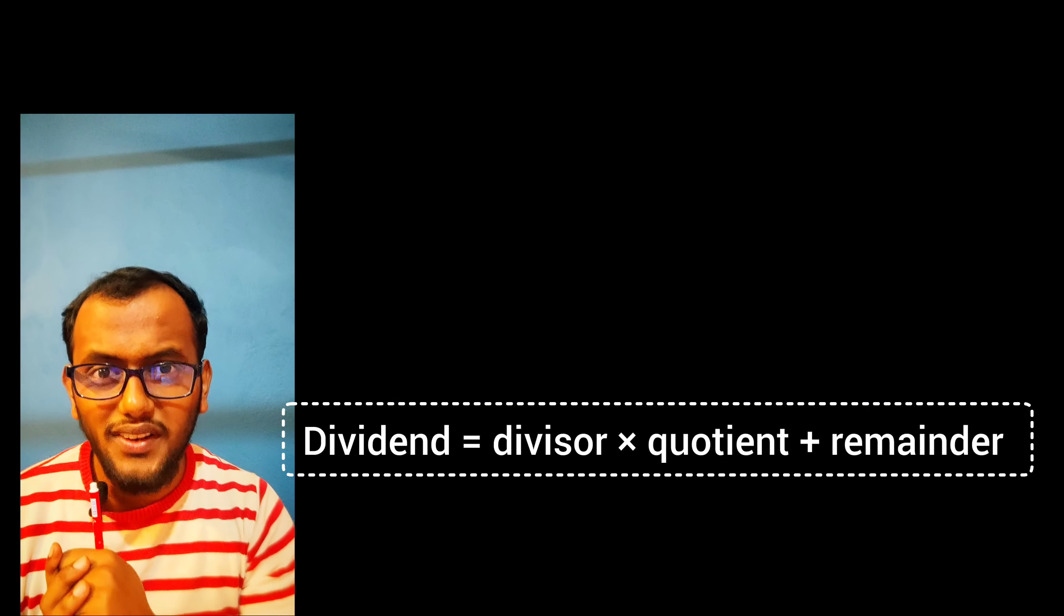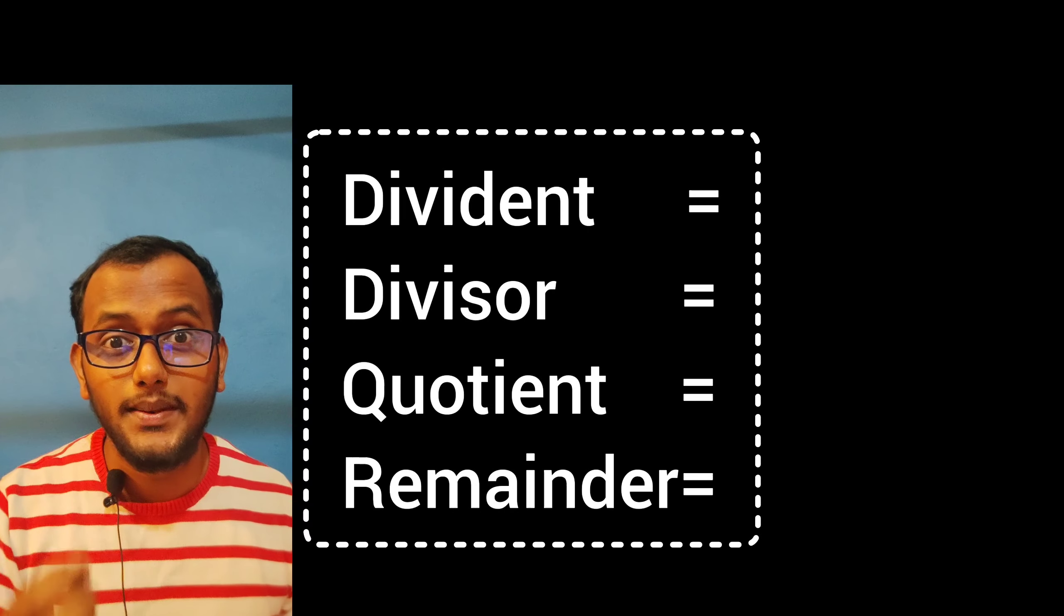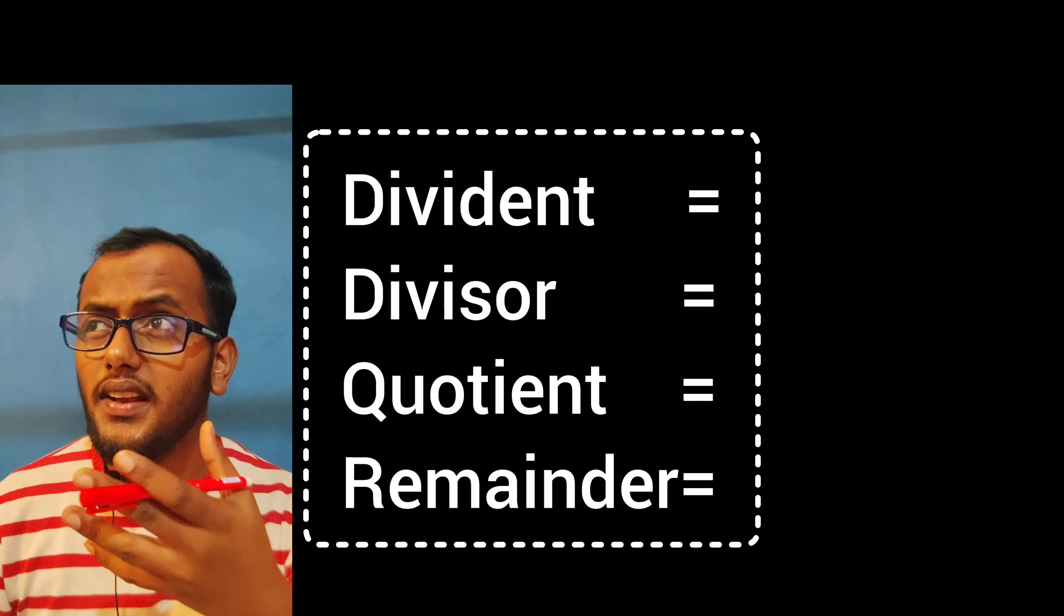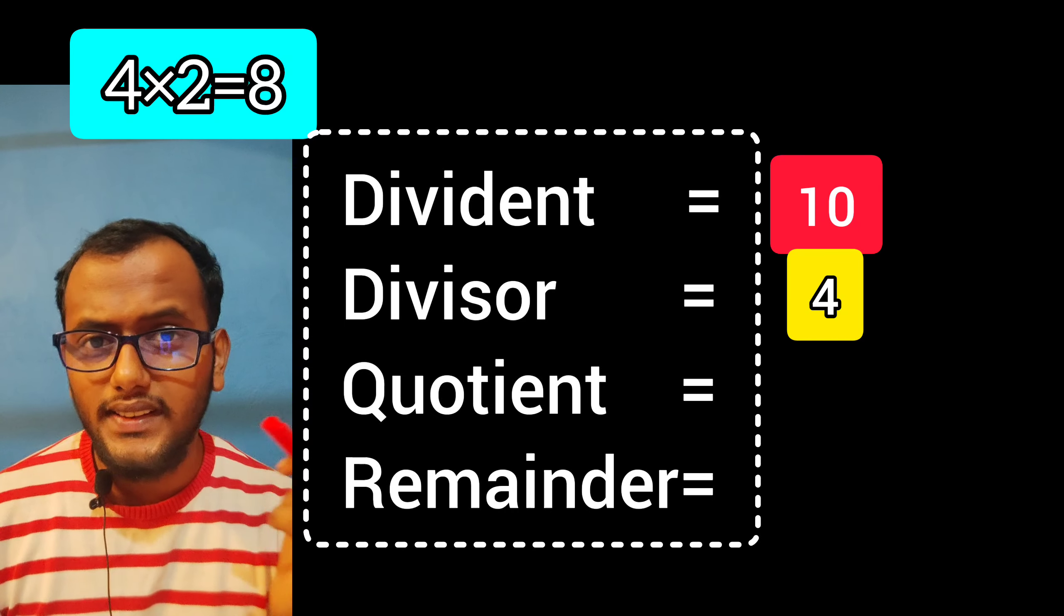Let's say the dividend is 10 and the divisor is 4. Then 4 × 2 = 8.